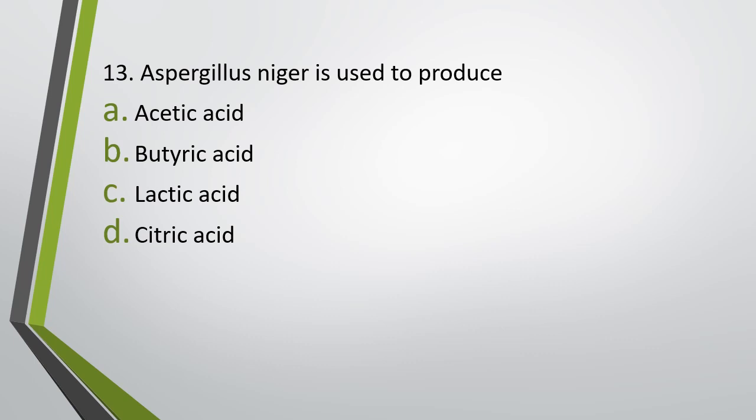Question number thirteen: Aspergillus niger is used to produce — (a) acetic acid, (b) butyric acid, (c) lactic acid, (d) citric acid. Correct answer is option D: citric acid.